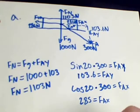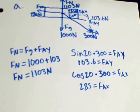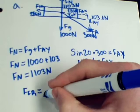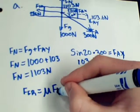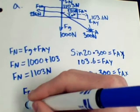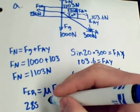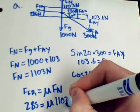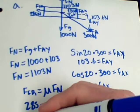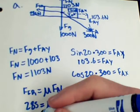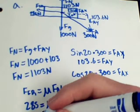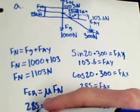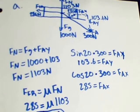Now we can solve for the kinetic friction between the crate and the floor. The equation we used is: force of friction equals mu multiplied by the normal force. So we have 285 newtons equals mu multiplied by 1103 newtons. Dividing 285 by 1103 gives us mu equals 0.26. And that is how we found the coefficient of kinetic friction.